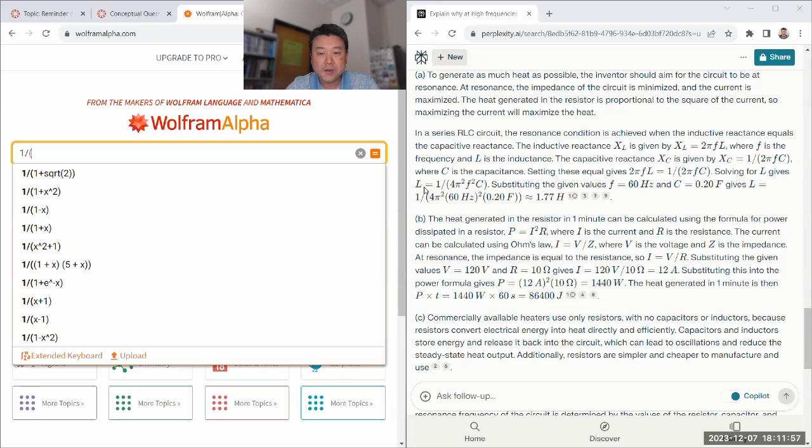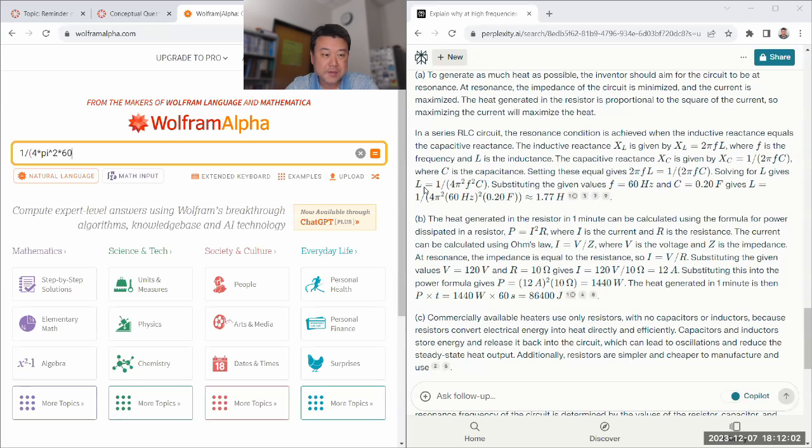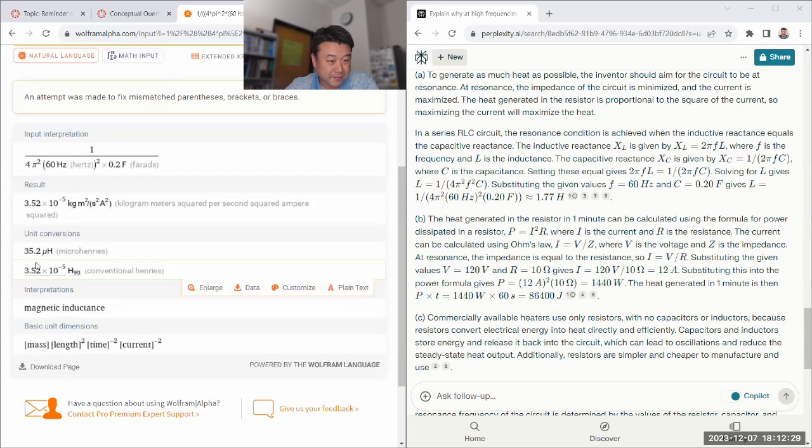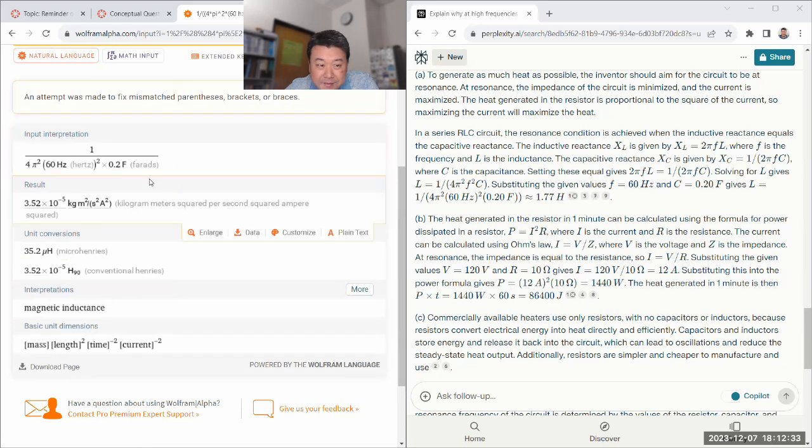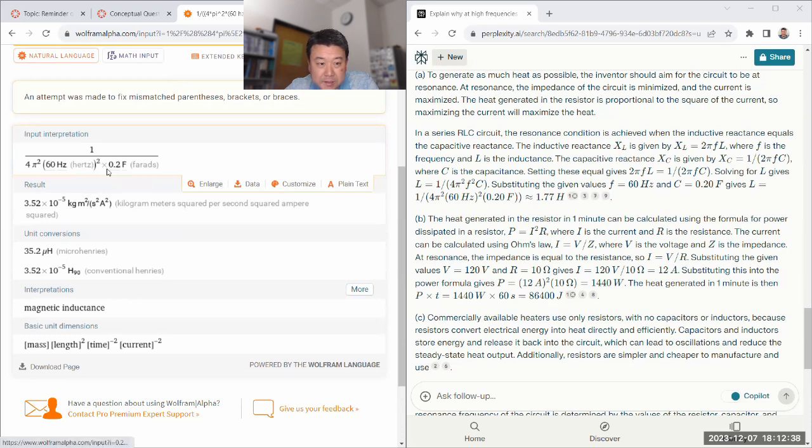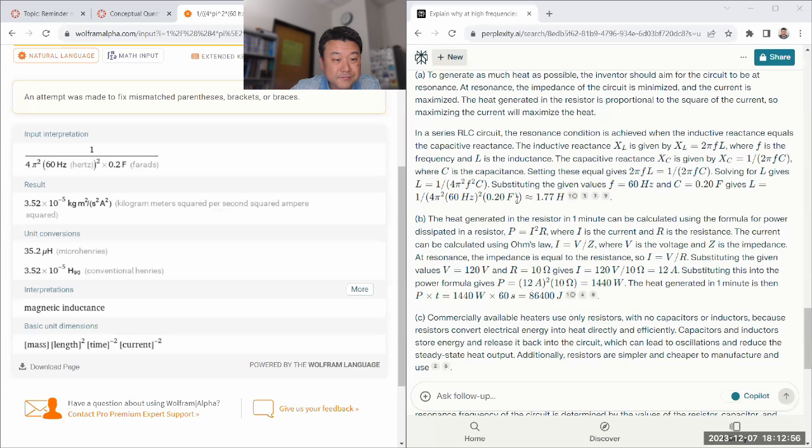L is equal to one divided by omega squared, which would be four pi squared times frequency squared. 60 hertz squared. Times C. That was what? 0.20 farad. And putting all that in. You should get an answer in Henry. And is that 1.77? It's not 1.77. That is four pi squared, 60 hertz squared, times 0.2 farad. It got the correct formula. And then it calculated the wrong number. 1.77 Henry. It should be 35.2 micro Henry. I'm glad I checked.